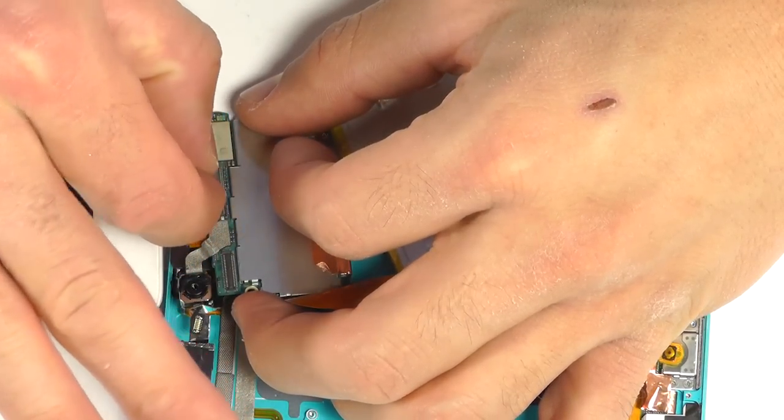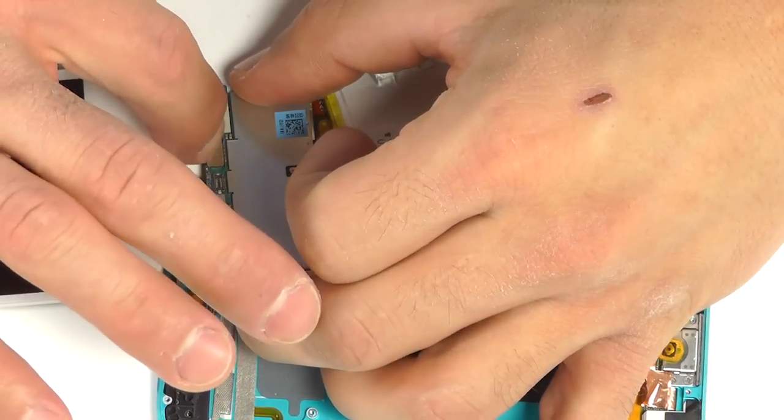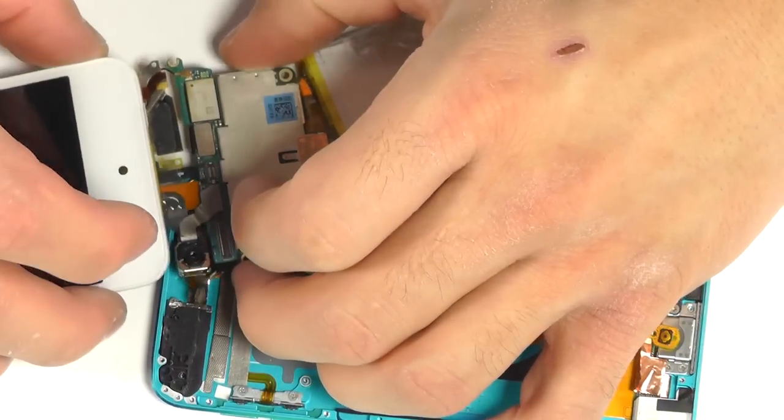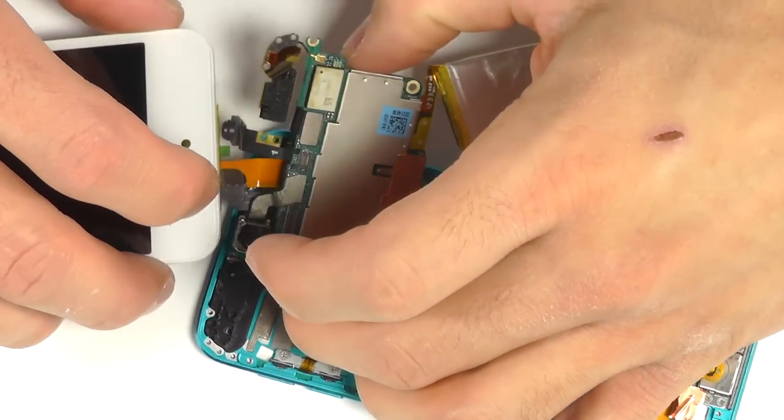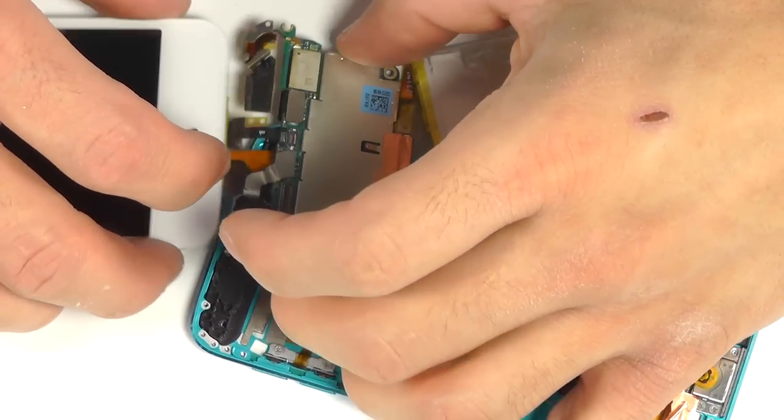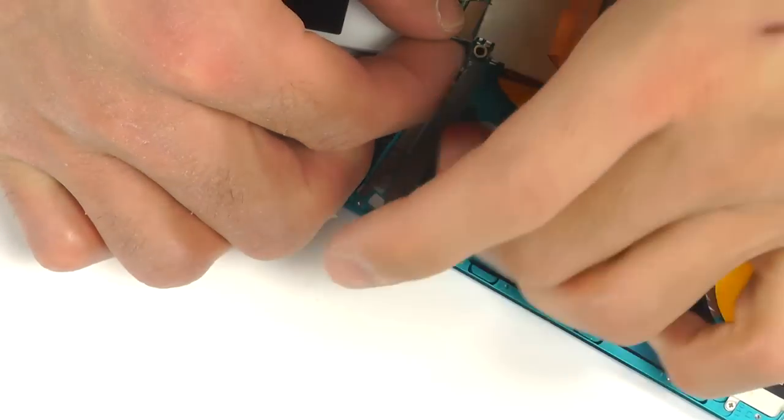We can now maneuver the new display assembly over to our motherboard and wrap our ribbon cable connections around the bottom side of the motherboard and firmly secure their connections. First one here for the LCD and then the second one here for the touchscreen digitizer.